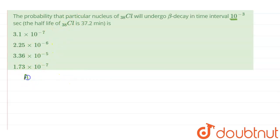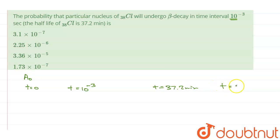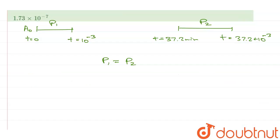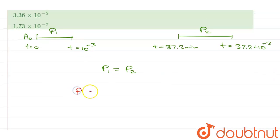What I mean by that is that initially, let us say I had A₀ number of nuclei. If I take the time interval from t=0 to t=10⁻³, or from t=37.2 minutes to t=37.2 minutes plus 10⁻³, in both of these time intervals the probabilities p1 and p2 will remain the same. So I can take any of the time intervals and the probability will remain the same. The probability for any event is given by favourable outcomes upon total outcomes.